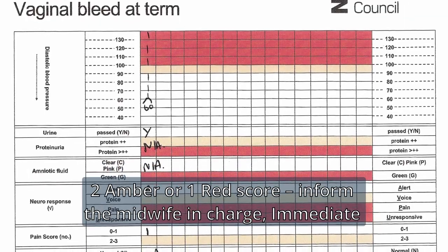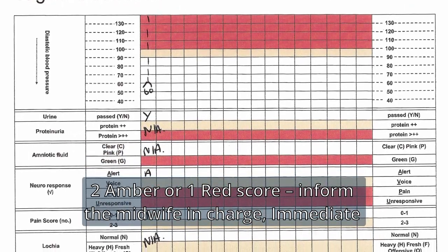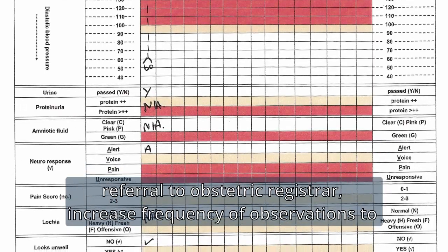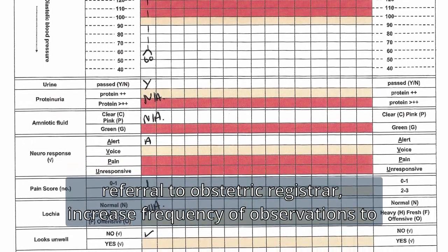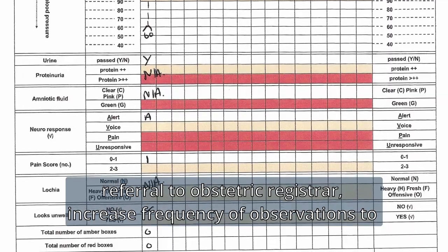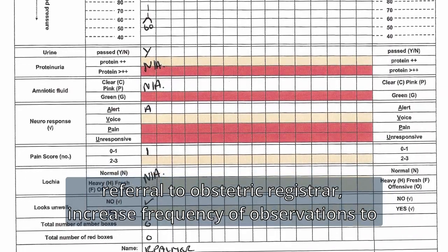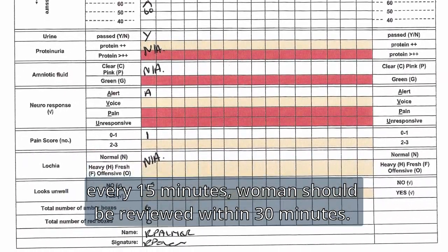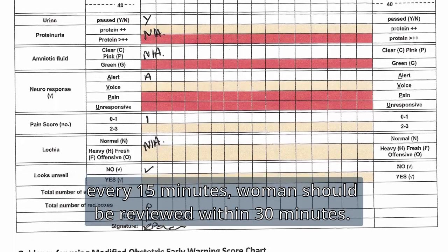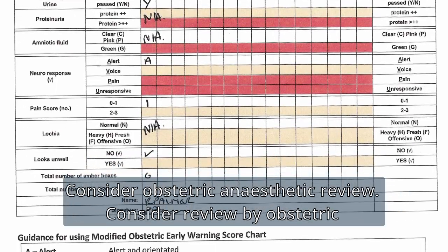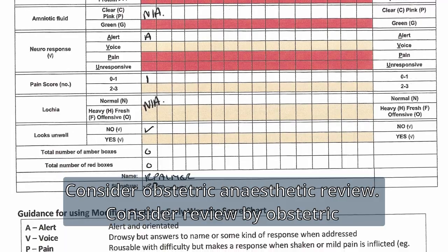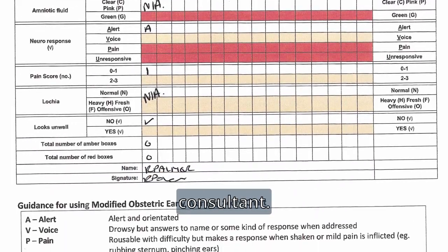Two amber scores or one red score: inform the midwife in charge, make an immediate referral to the obstetric registrar, and increase the frequency of observations to every 15 minutes. The woman should be reviewed within 30 minutes. Consider obstetric anaesthetic review and review by the obstetric consultant.